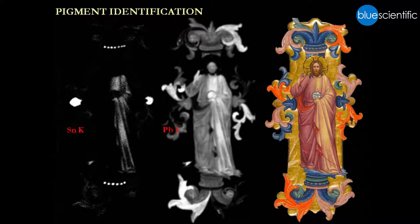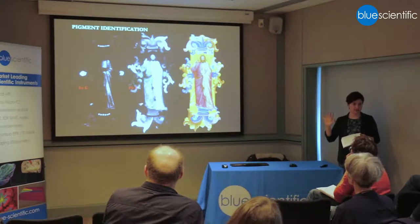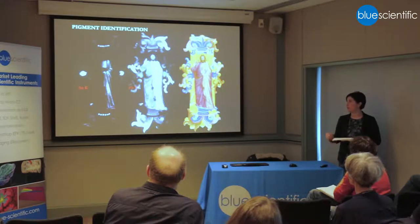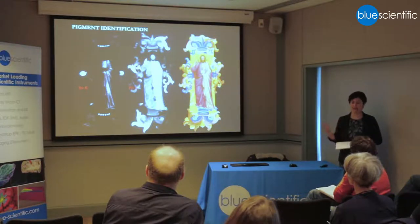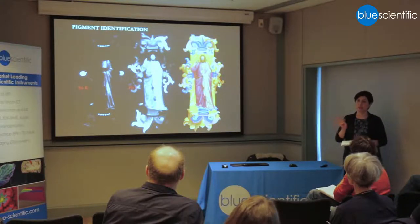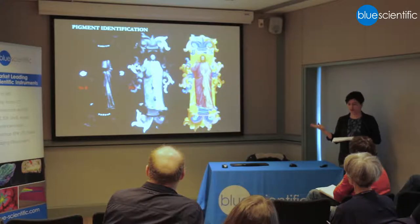In this case, I've put up two maps — one for tin and one for lead. Historically speaking, there are a total of four pigments in which I can find these two elements: mosaic gold, which is tin sulfide; red lead, which is lead tetroxide; lead white, which is lead carbonate; and lead tin yellow. These are the four pigments I'm looking for when examining these two maps.